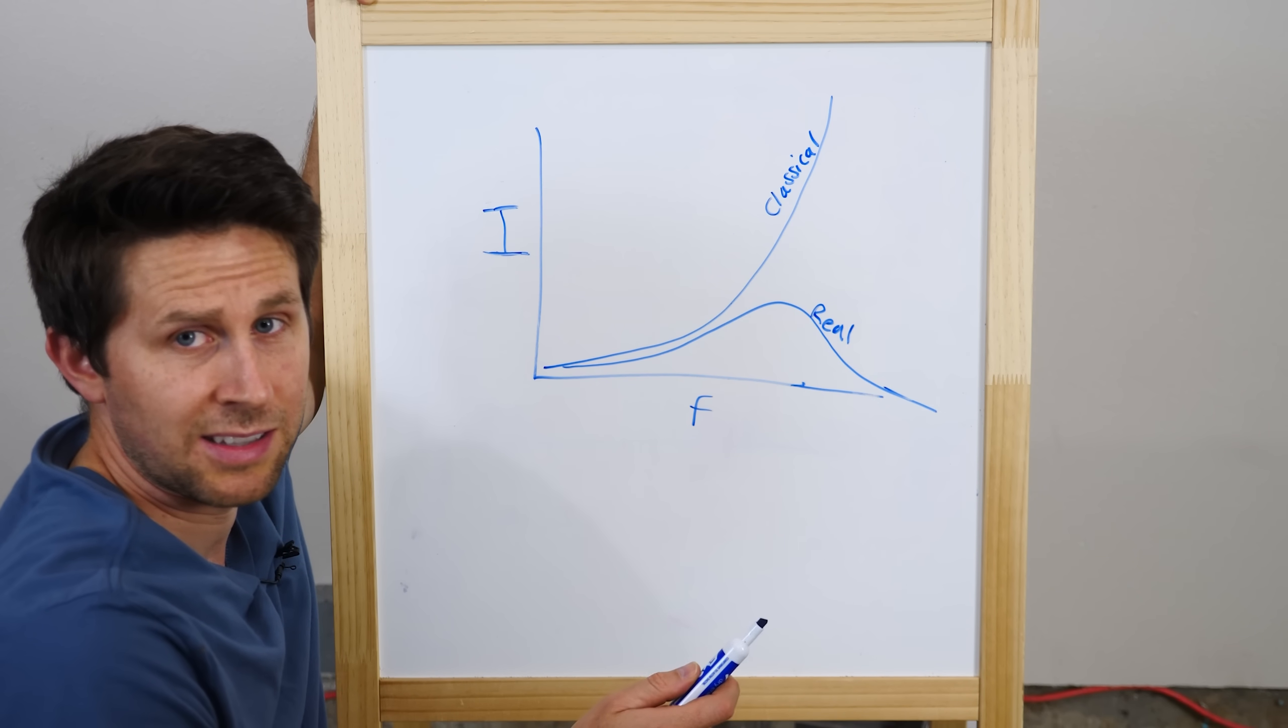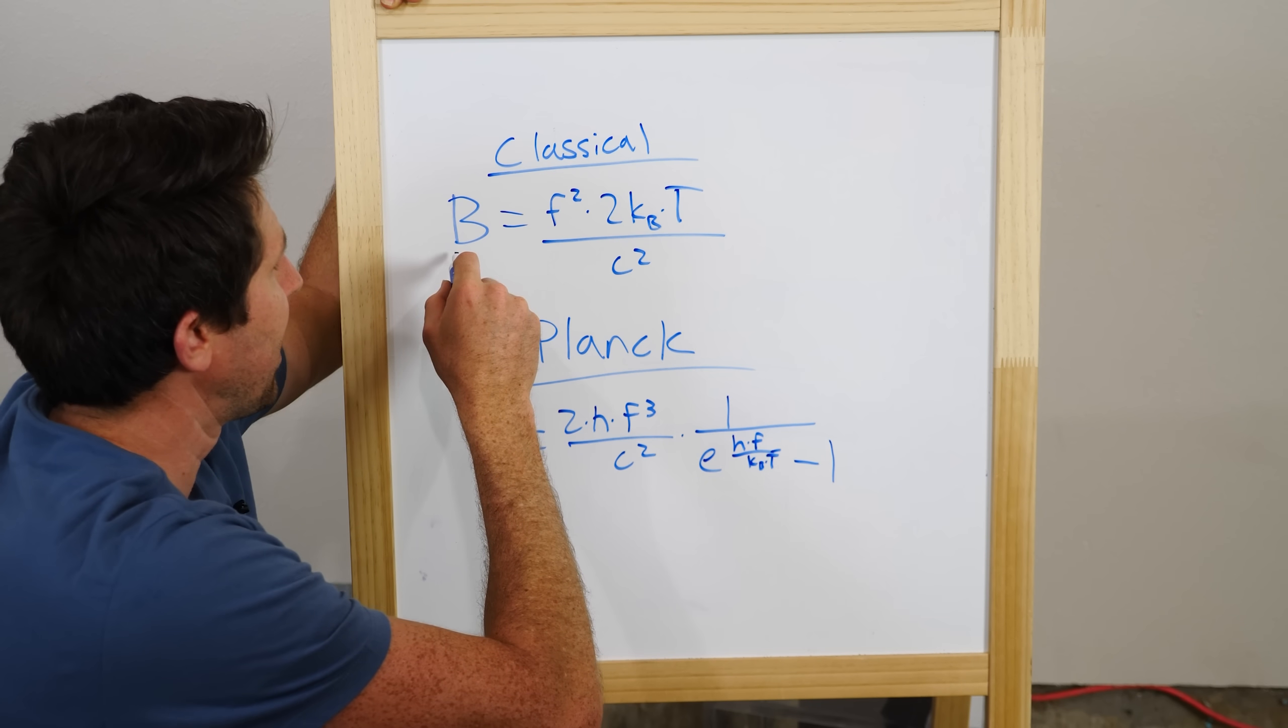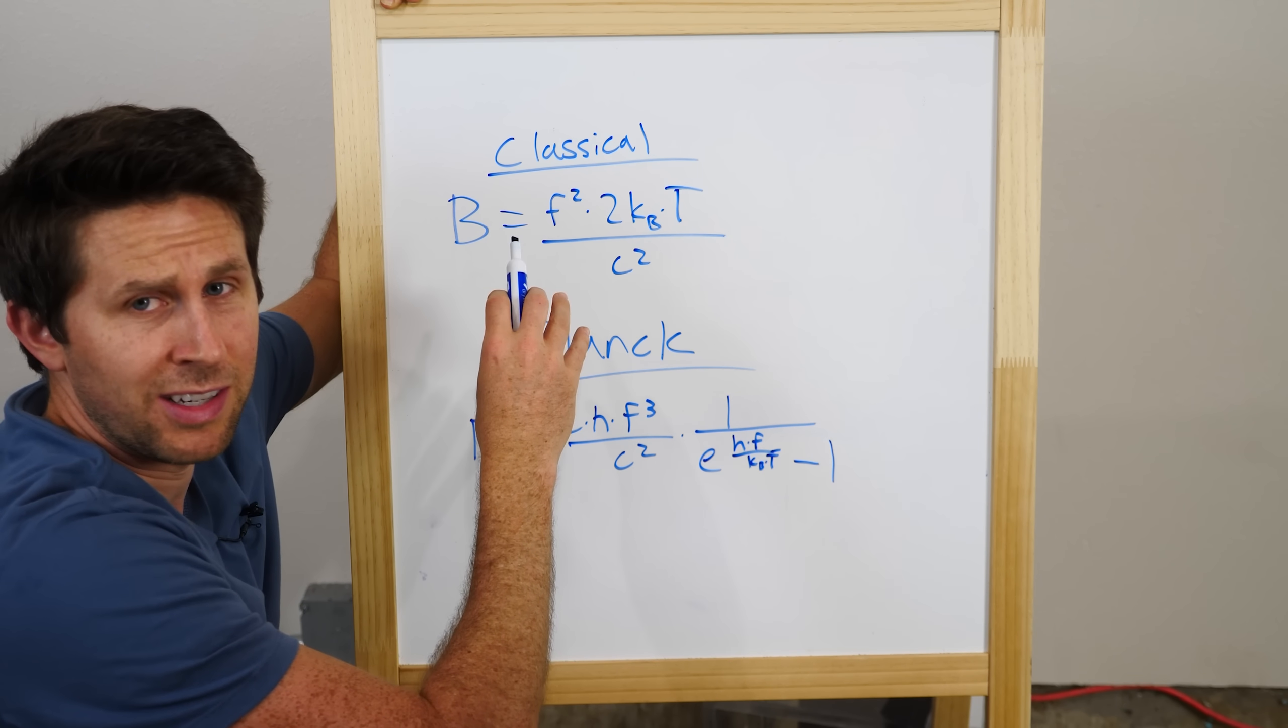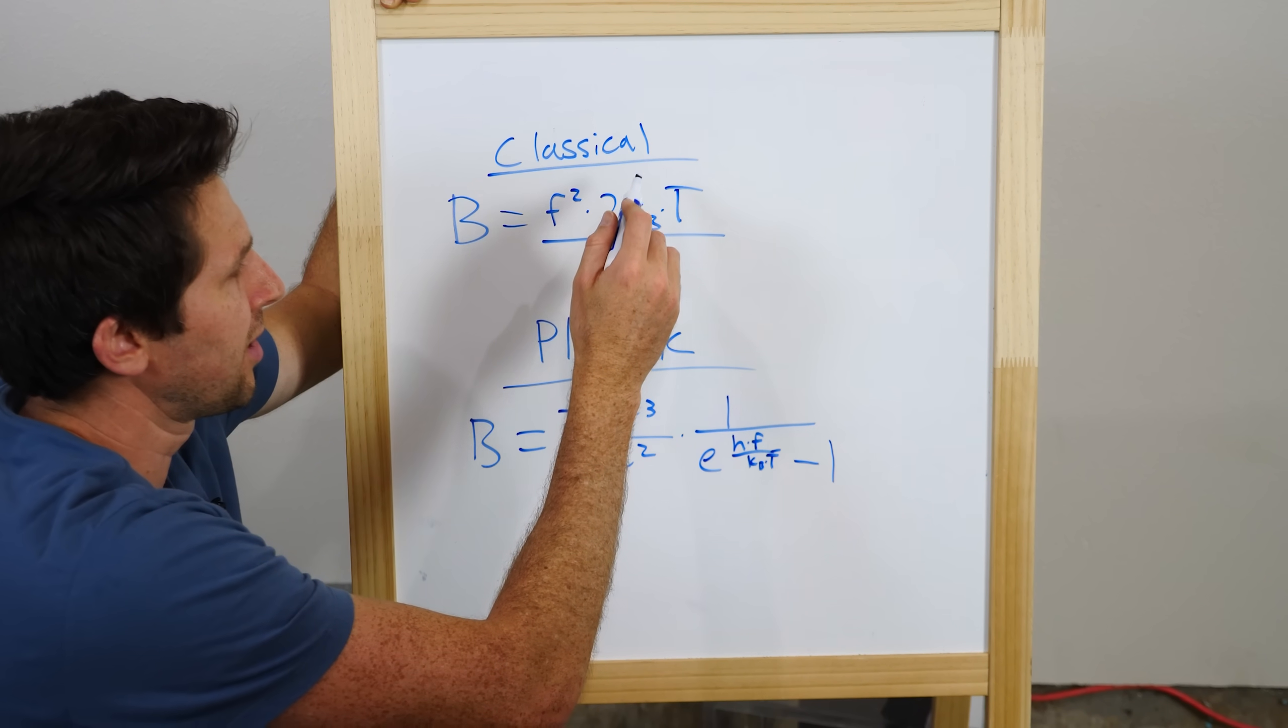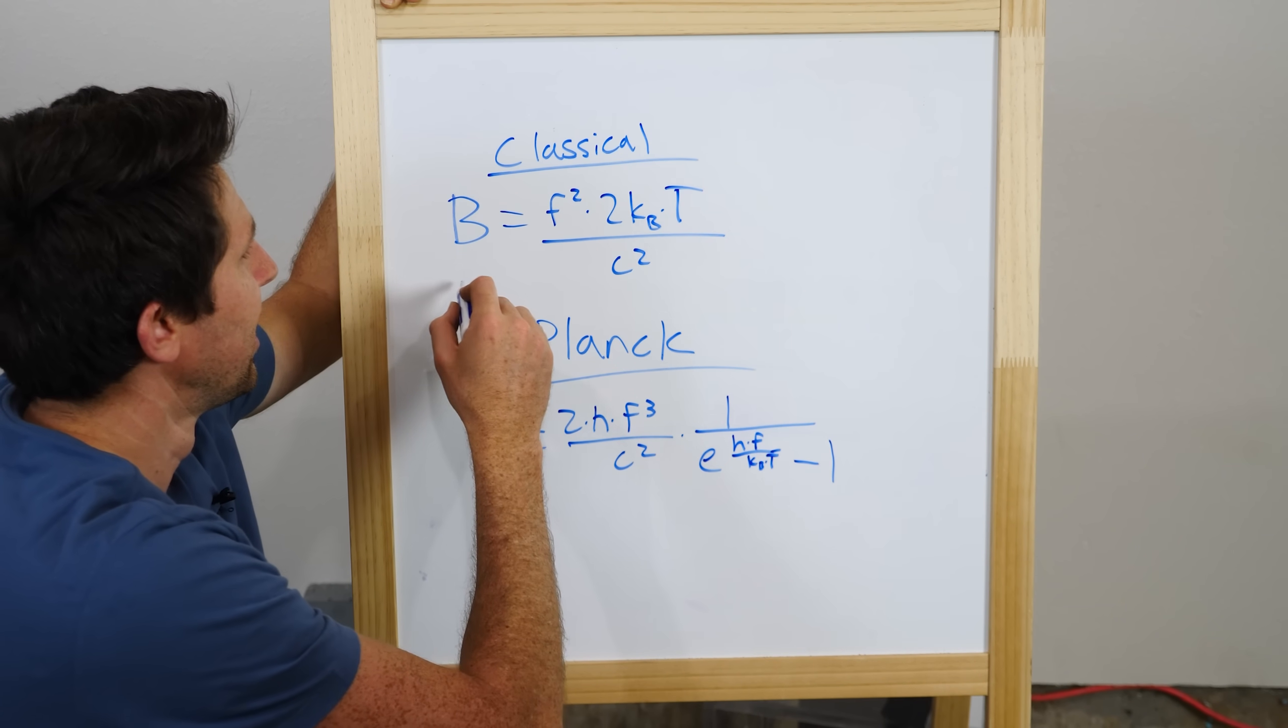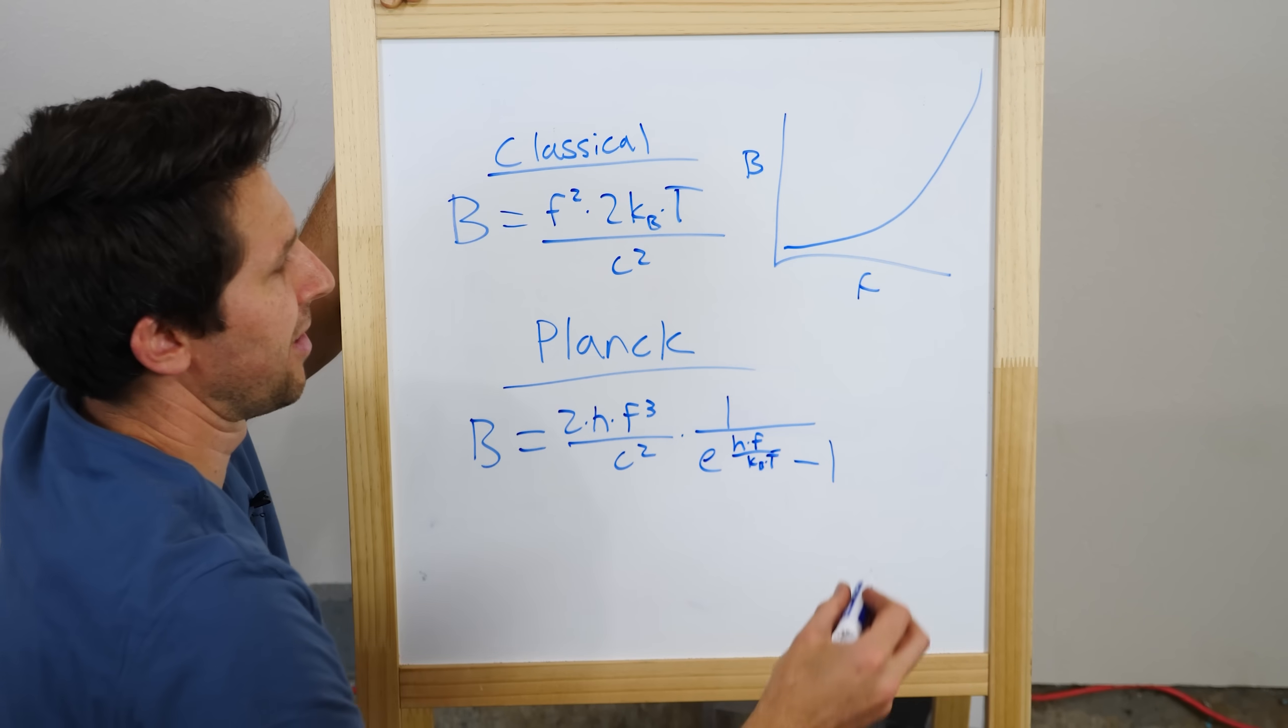So why is it that these two don't match each other? If you say that any atom in your black body radiator can have any energy, then you end up with an equation like this, which is B, which is just kind of another term for intensity. It's called spectral radiation. You have B equals the frequency squared times two times Boltzmann's constant times temperature over the speed of light squared. So this is the equation that makes your plot look like this, where it kind of just goes off into infinity.